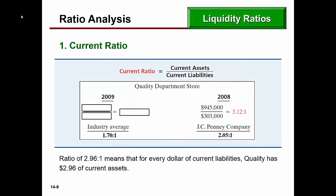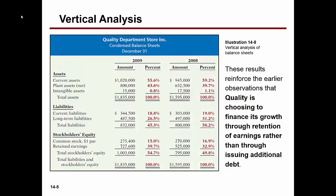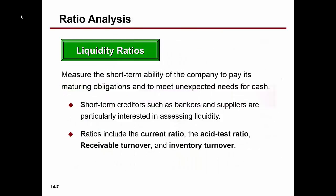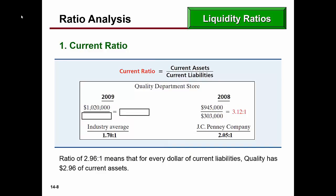We have something called the current ratio, which is current assets divided by current liabilities. Using the same financial statement, current assets are $1,020,000 and current liabilities are $344,500. Divide current assets by current liabilities and this company has a current ratio of 2.96 to 1.